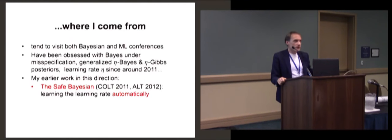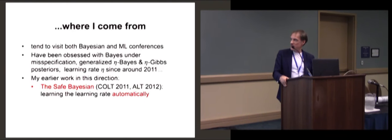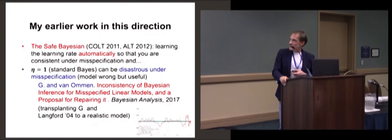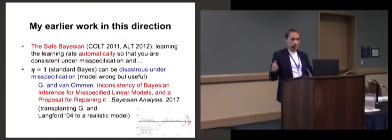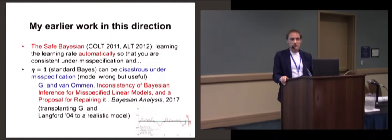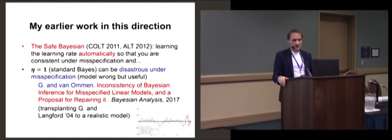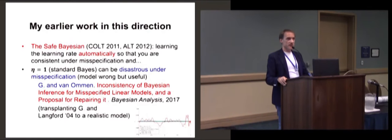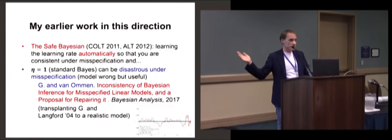I've done a lot of work with several co-authors in this direction. Relevant for this talk is that it started with something I call the safe Bayesian — a method for learning the learning rate eta automatically from the data. In another paper just recently accepted to Bayesian Analysis, we show that if you have a probability model that is wrong but useful, and you use standard Bayes, you can actually sometimes get disastrous results — this can happen just for linear regression. It's sometimes really important to take eta smaller than one, because if you do, these problems typically go away. The risk bounds I present will explain why eta smaller than one works.